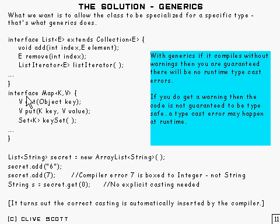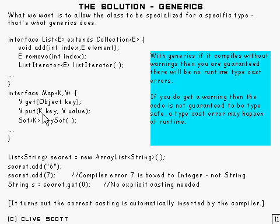Down here is the interface for map, and it's got two type parameters this time: K and V — K for the key and V for the value. If we look at the put method, which is storing a particular key-value pair, we can see we've used K for the type of the key and V for the type of the value. What gets returned is the previous value if there is one, so the return type is V.